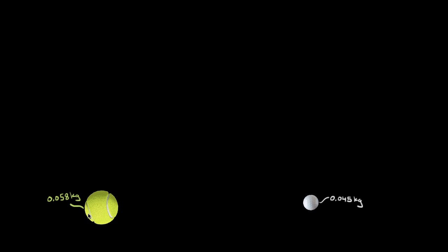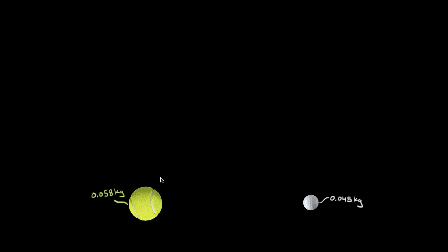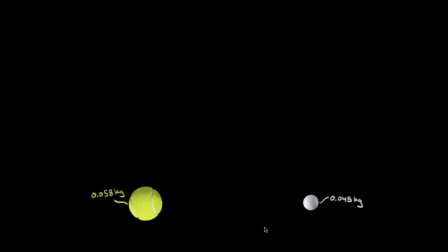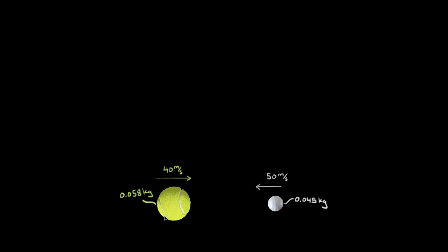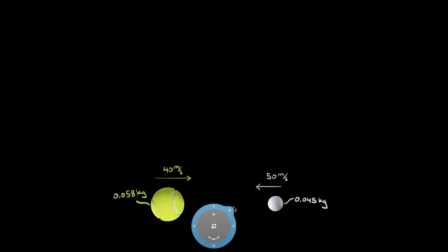The mass of a tennis ball is about 58 grams or 0.058 kilograms. If we shoot that tennis ball to the right straight toward a golf ball, the mass of a golf ball is about 45 grams or 0.045 kilograms. The golf ball is moving at 50 meters per second, and we shoot the tennis ball to the right at 40 meters per second, so these balls collide head on.